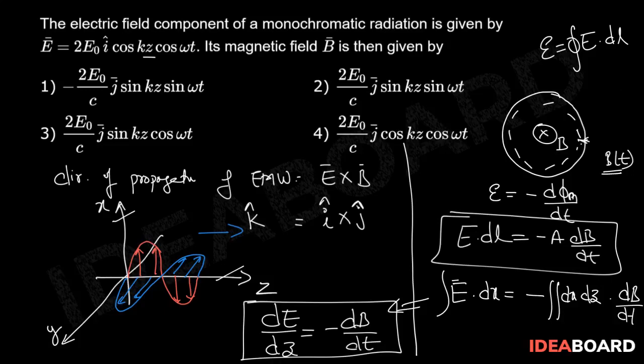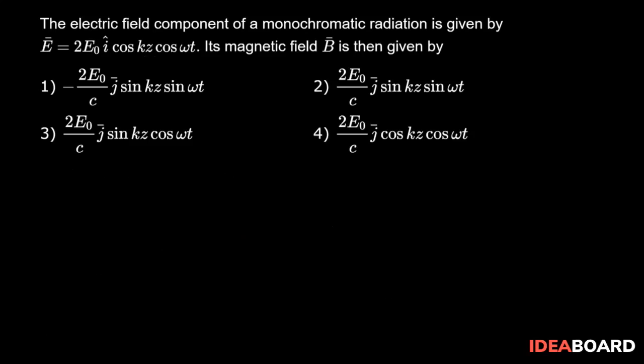Let's erase this entire thing. Now, the relation between electric field and magnetic field what we are getting is dE/dz = -dB/dt.